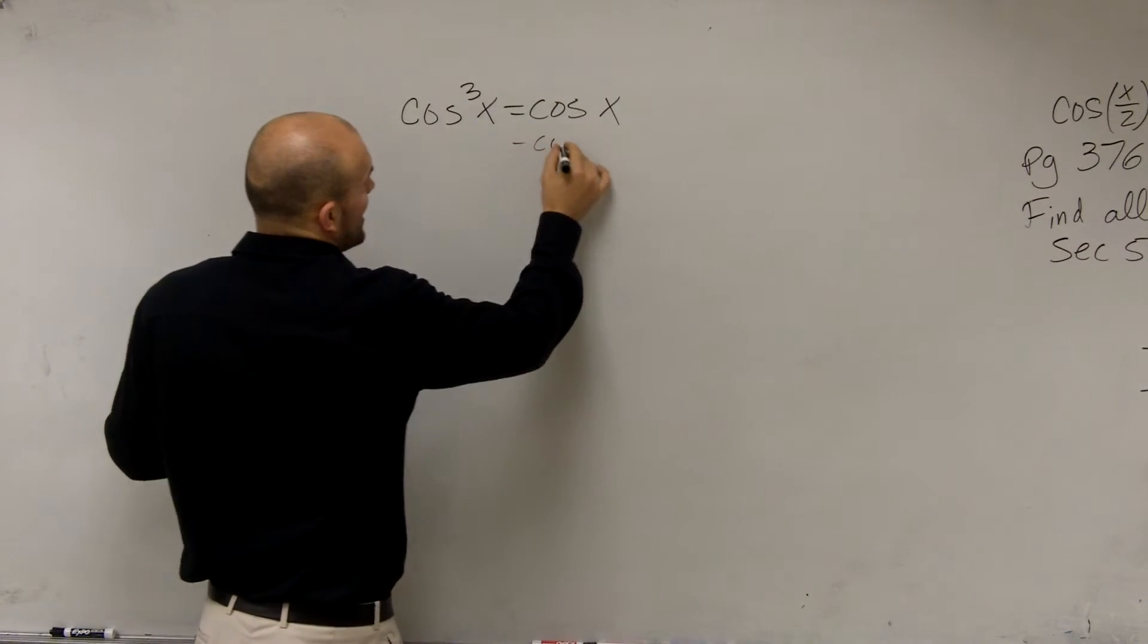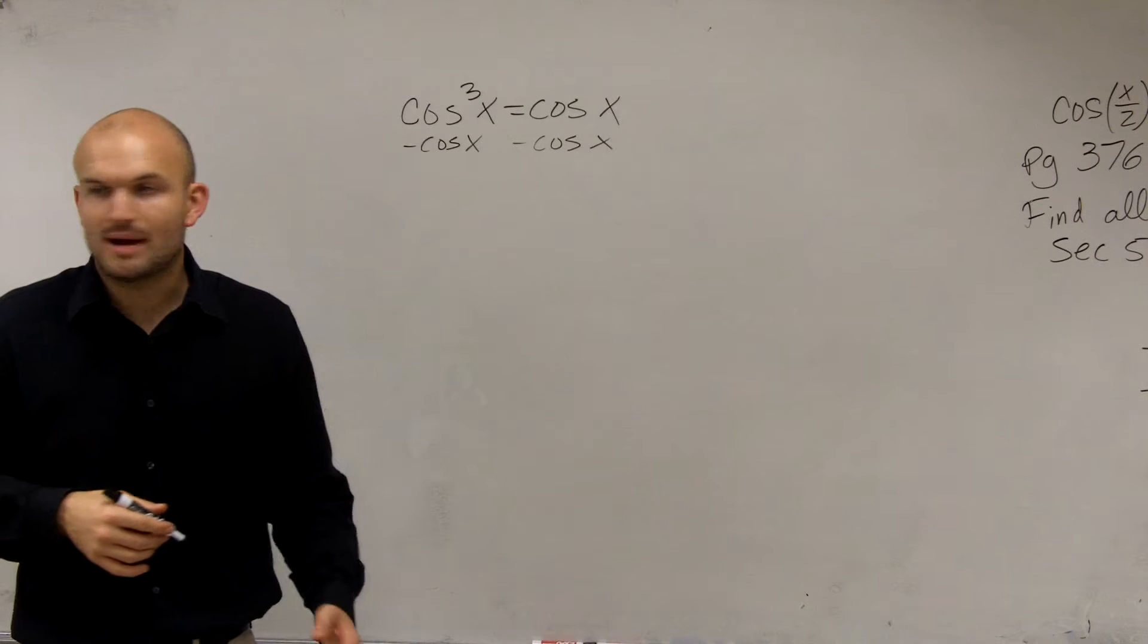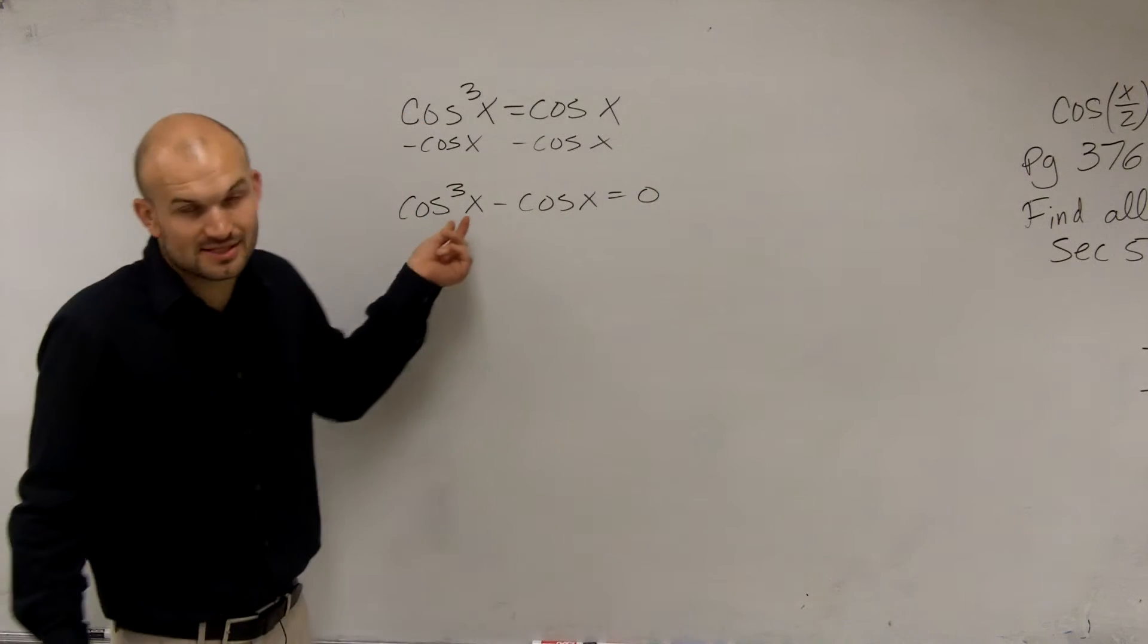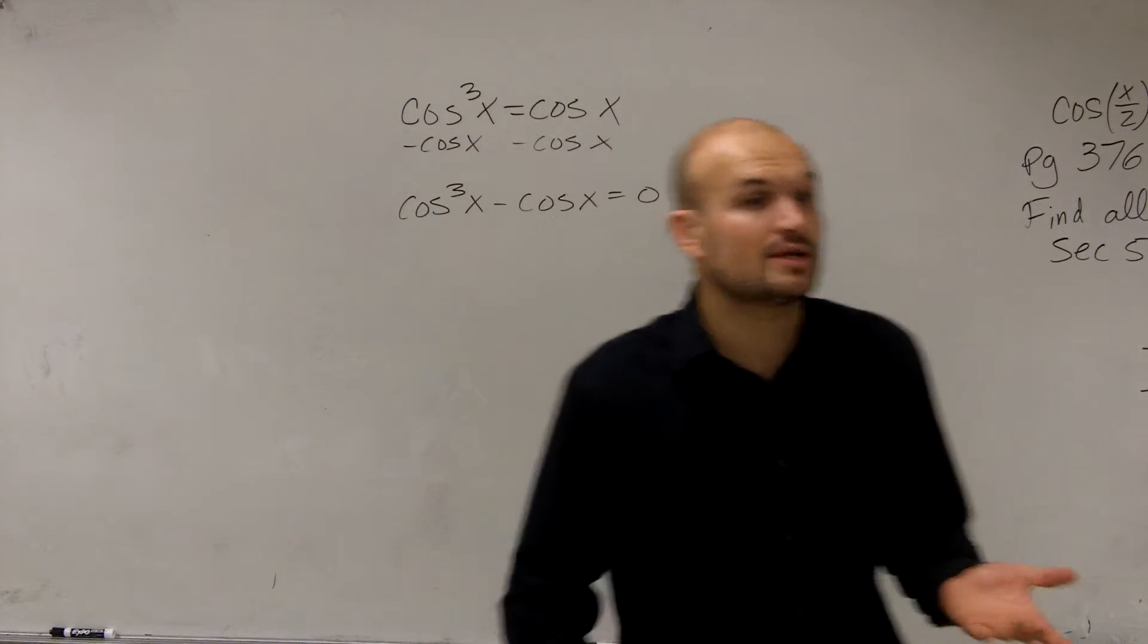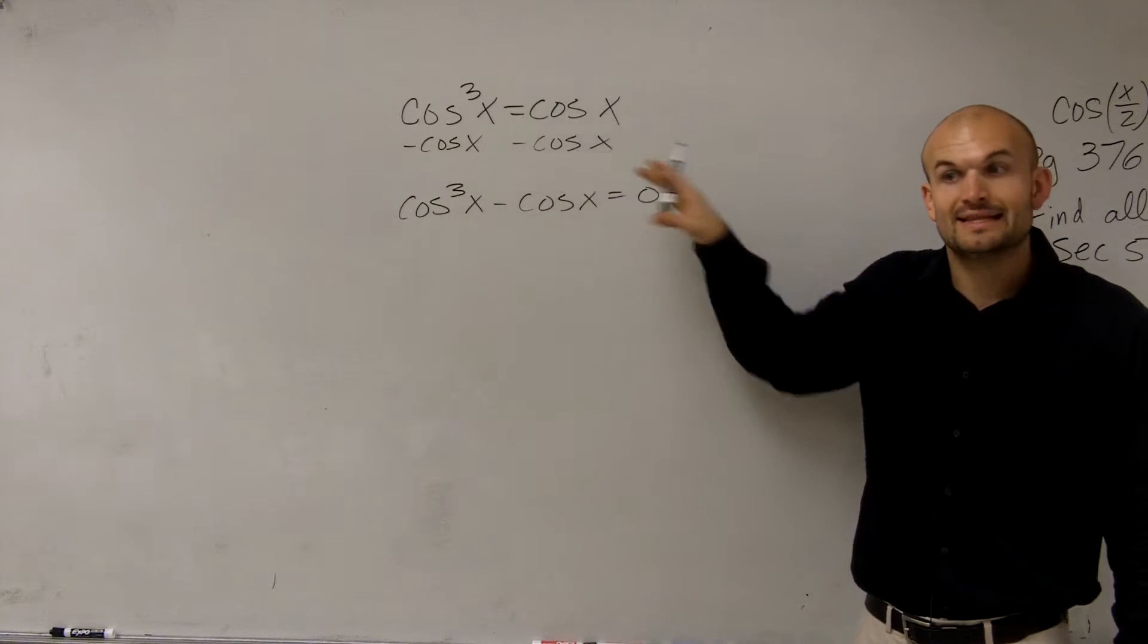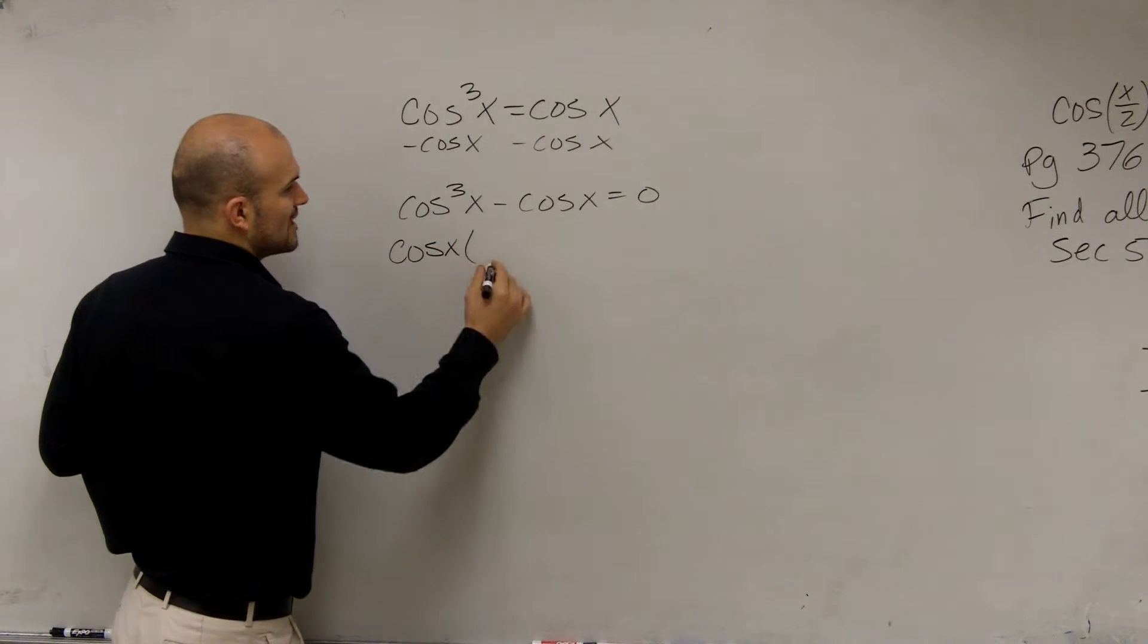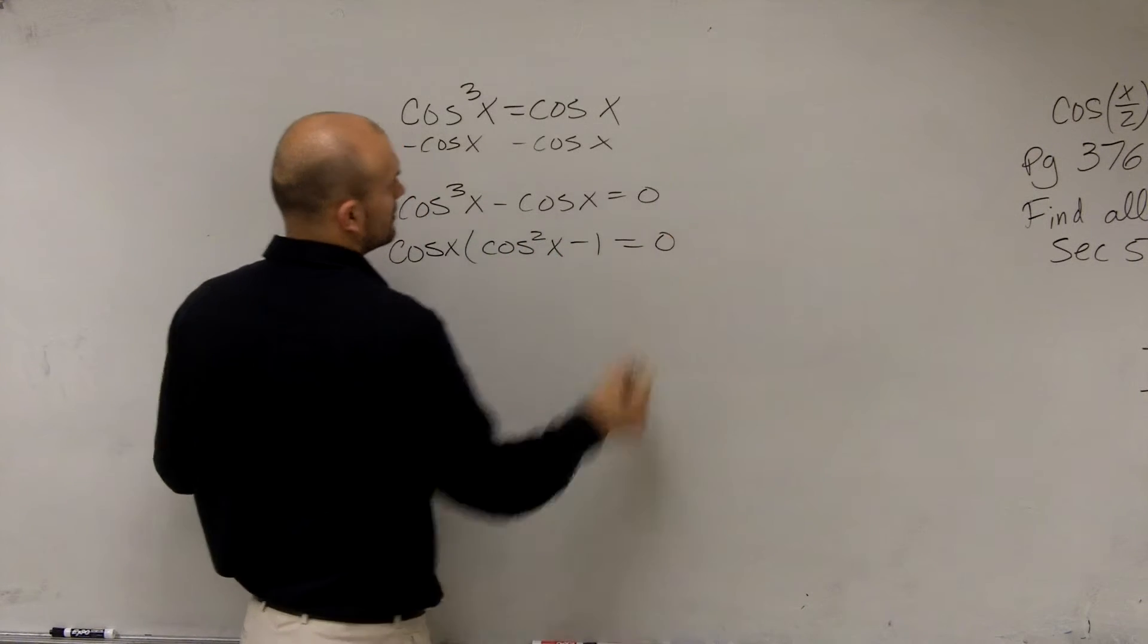I'm going to subtract cosine of x from both sides. I don't want to divide out the x because that's going to leave out solutions. Therefore, I have cos³x - cos x = 0. We can't combine these because this is cosine cubed and this is cosine of x. When we have multiple terms that equal 0, can we rewrite this as a product to equal 0 so we can use the zero product property? I factor out cosine of x, which leaves me with cos²x - 1 = 0.